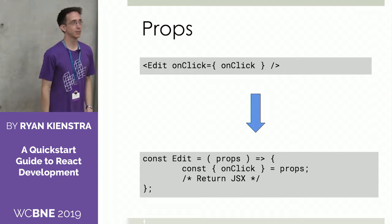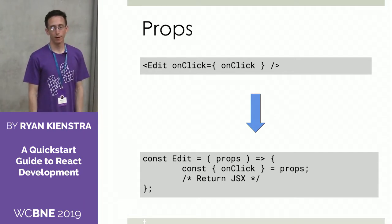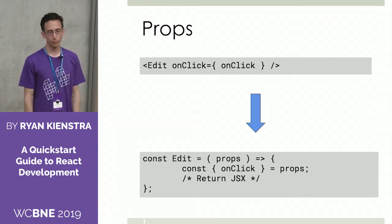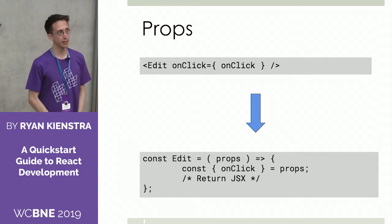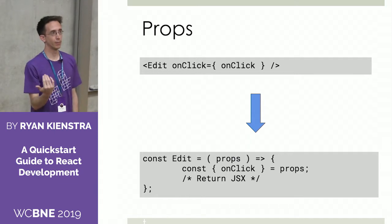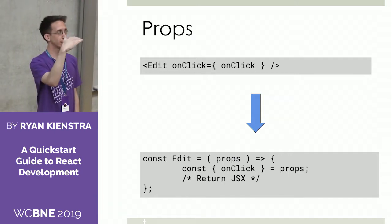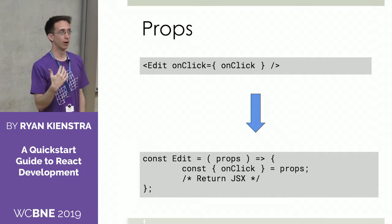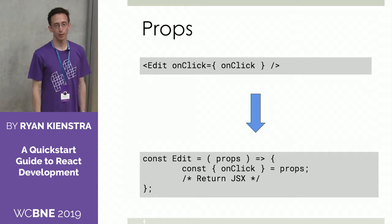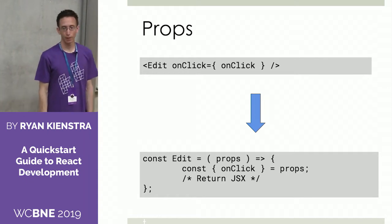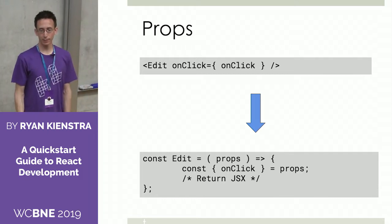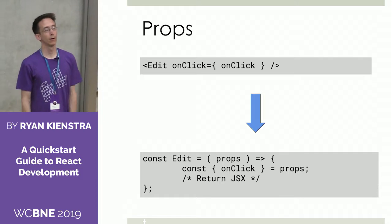We looked at props, just like HTML has props, and the nice thing is that these are available inside the rendering function. There are two parts of JSX: you have the actual syntax, and then all of these components — just like HTML elements — will have a rendering function or class, which is really a function also. So that prop of onclick becomes available inside the function. That's the typical syntax you'll see for React functions.